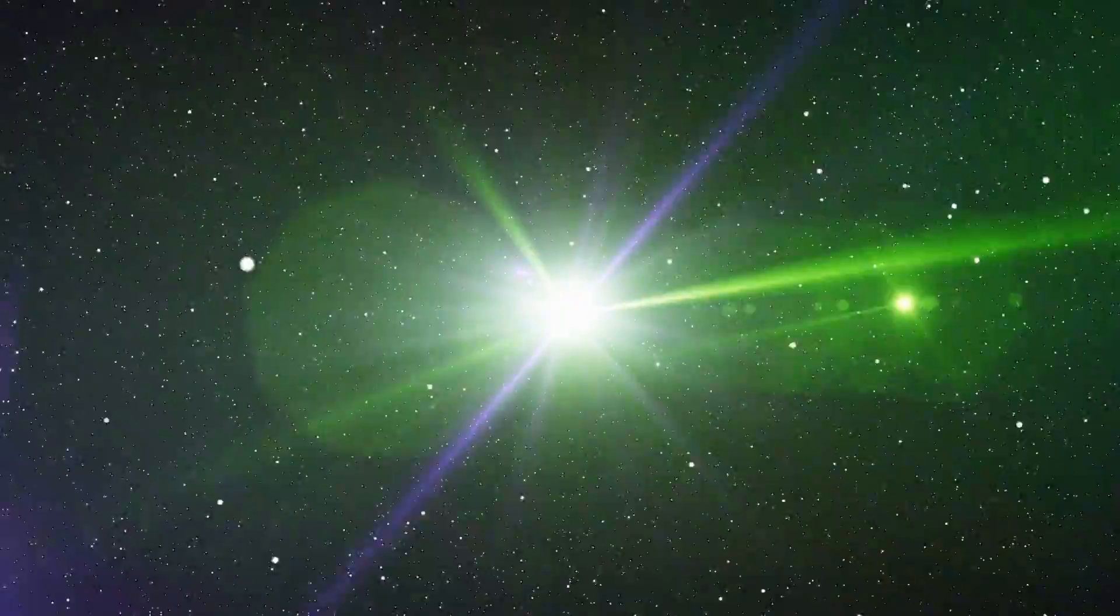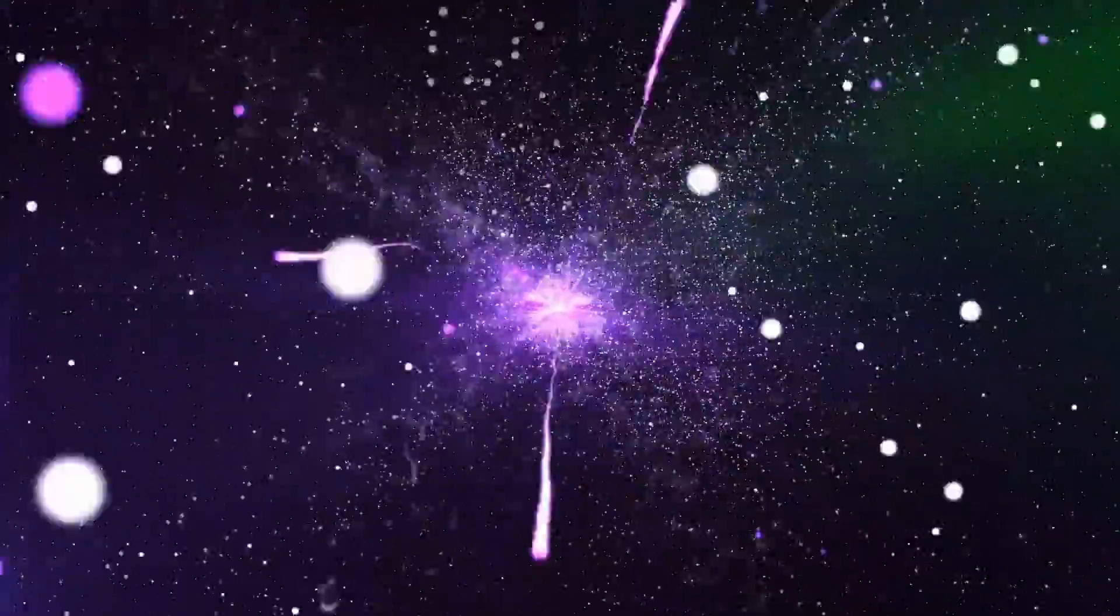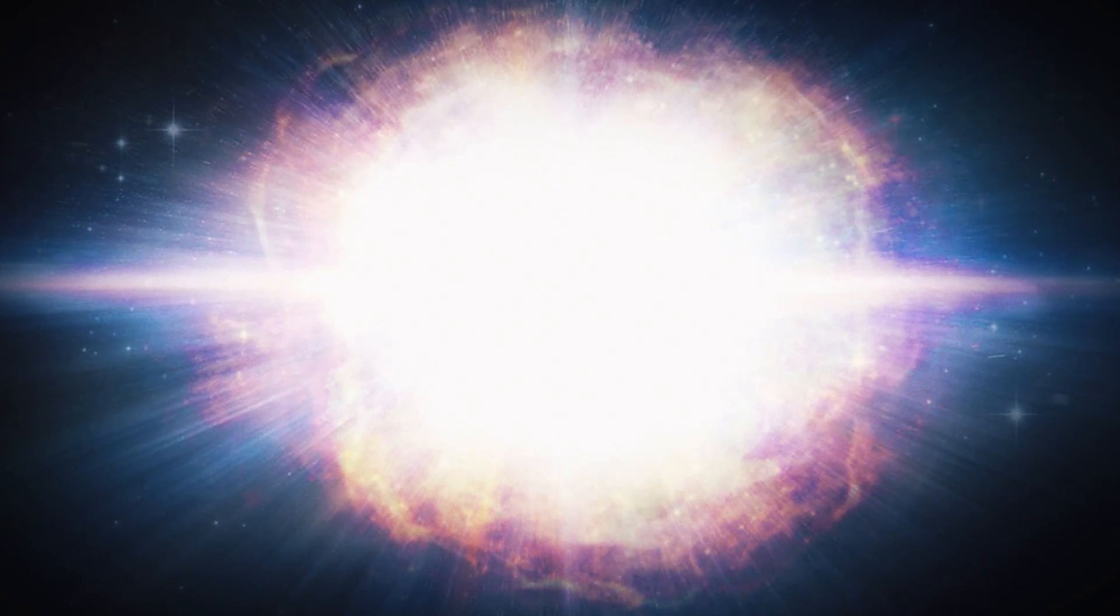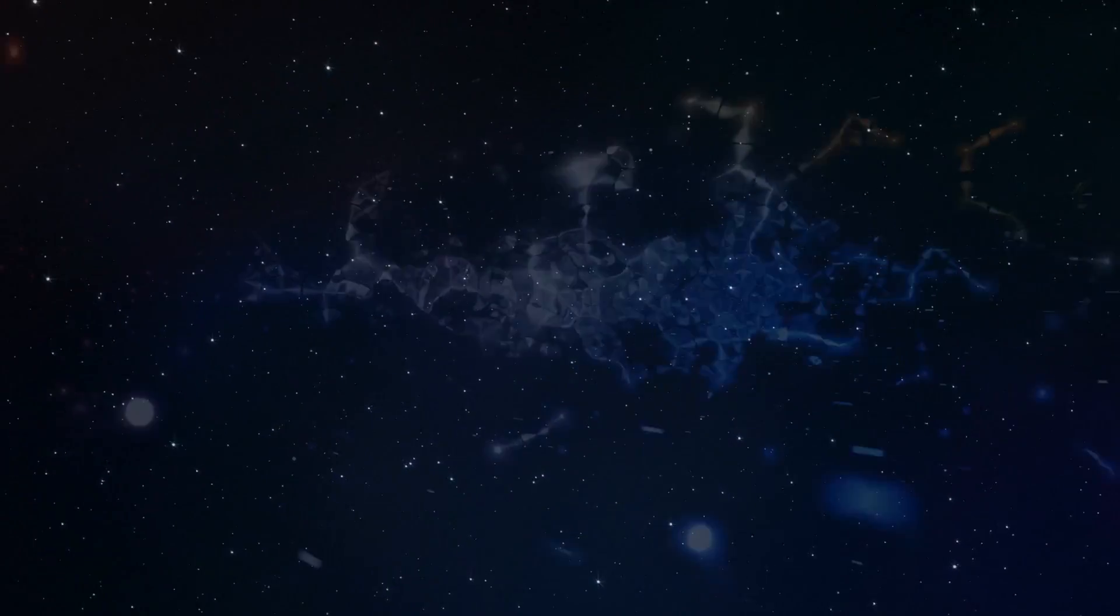When the core finally collapsed and the actual supernova began, the ejecta from the explosion would have interacted with this gas shroud, resulting in a secondary burst of high-intensity radiation.